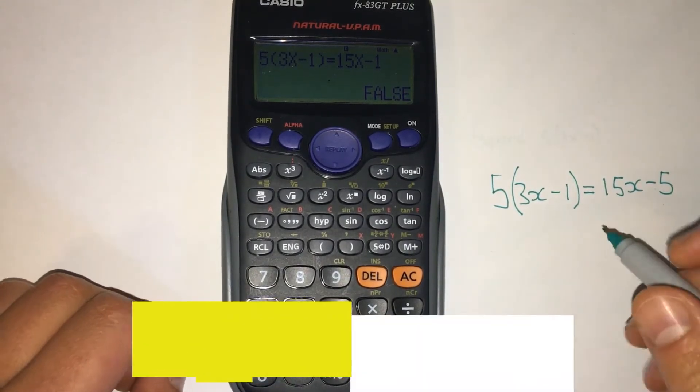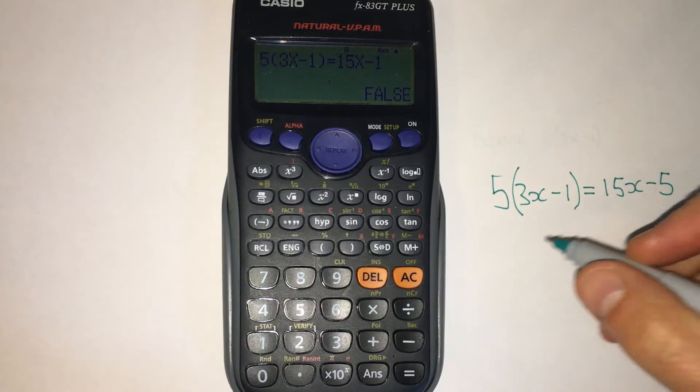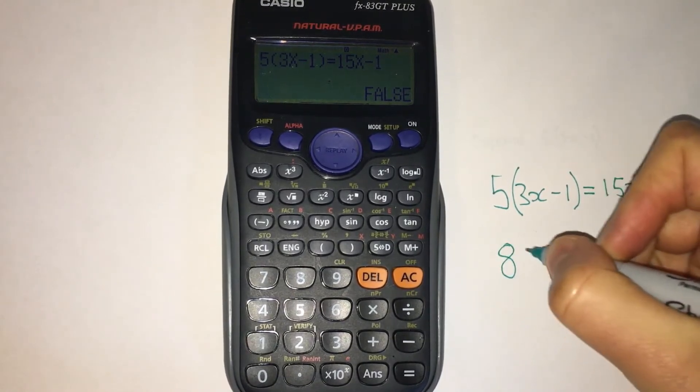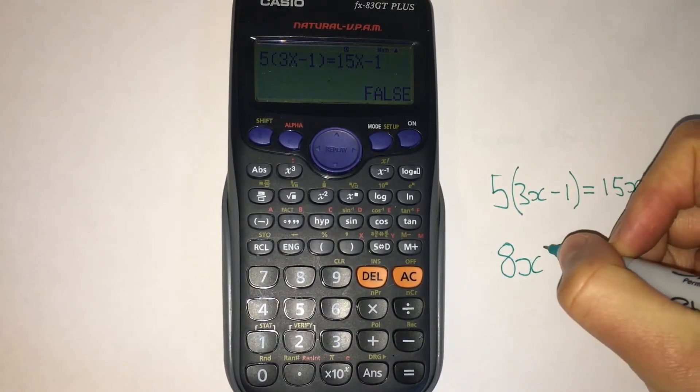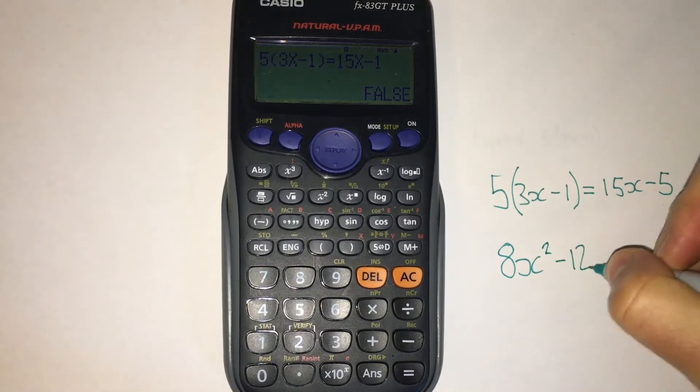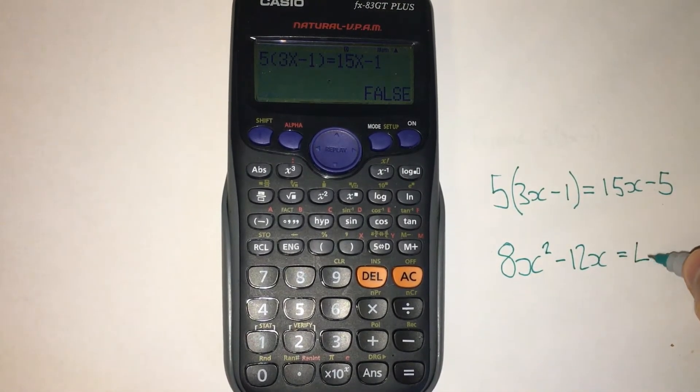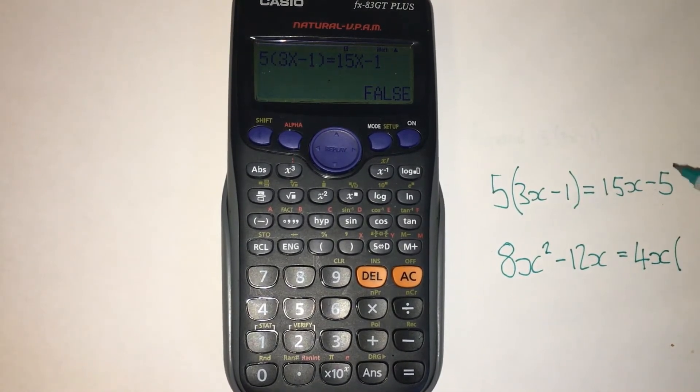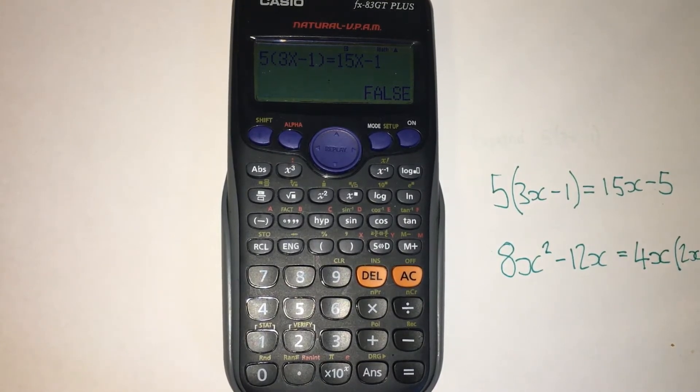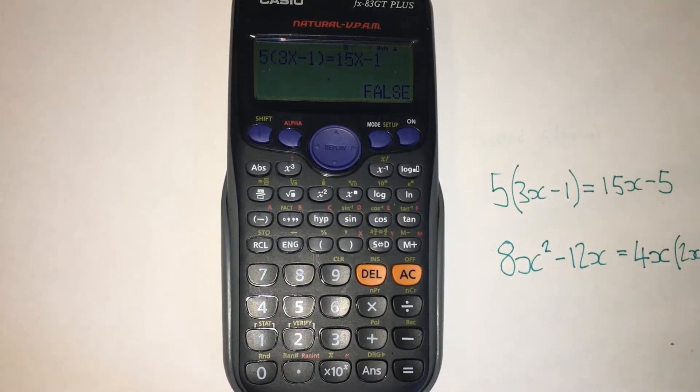We could check an answer to a factorizing question. For example, factorize eight x squared minus twelve x. What have we got here then? Well, we hoped maybe we'd get the answer four x brackets, and then we've got two x minus three, close the bracket.